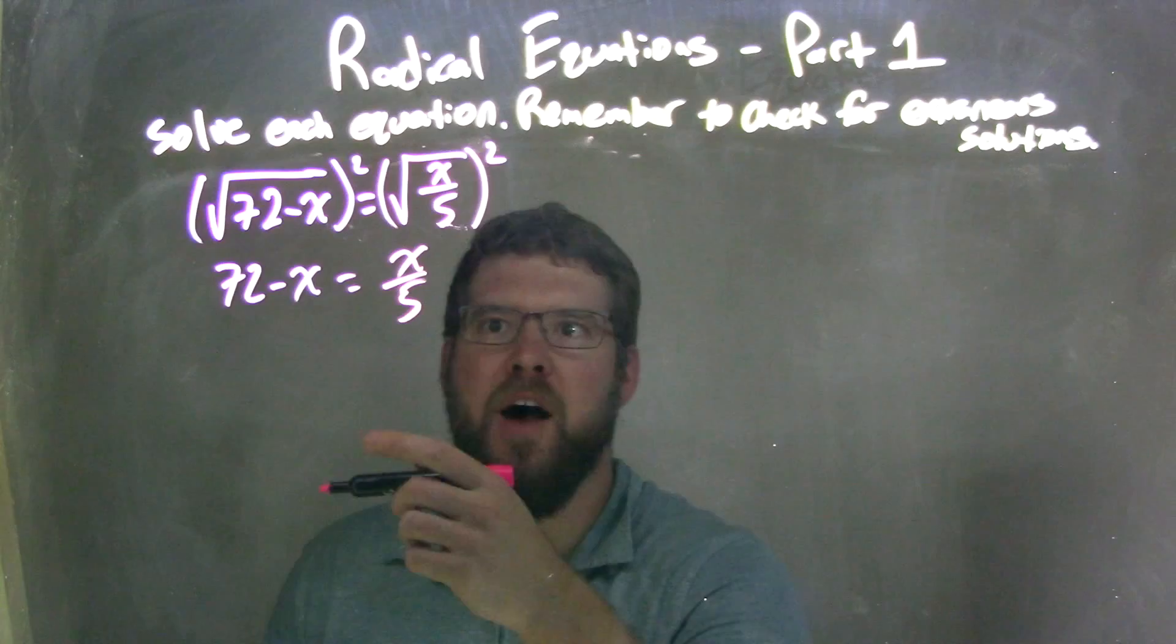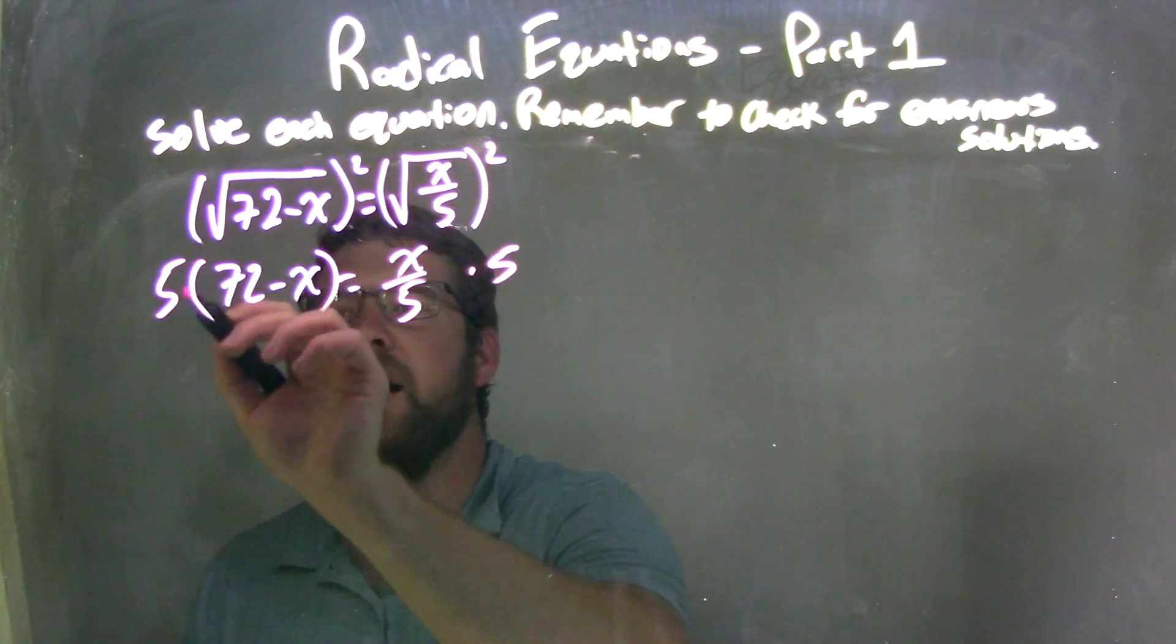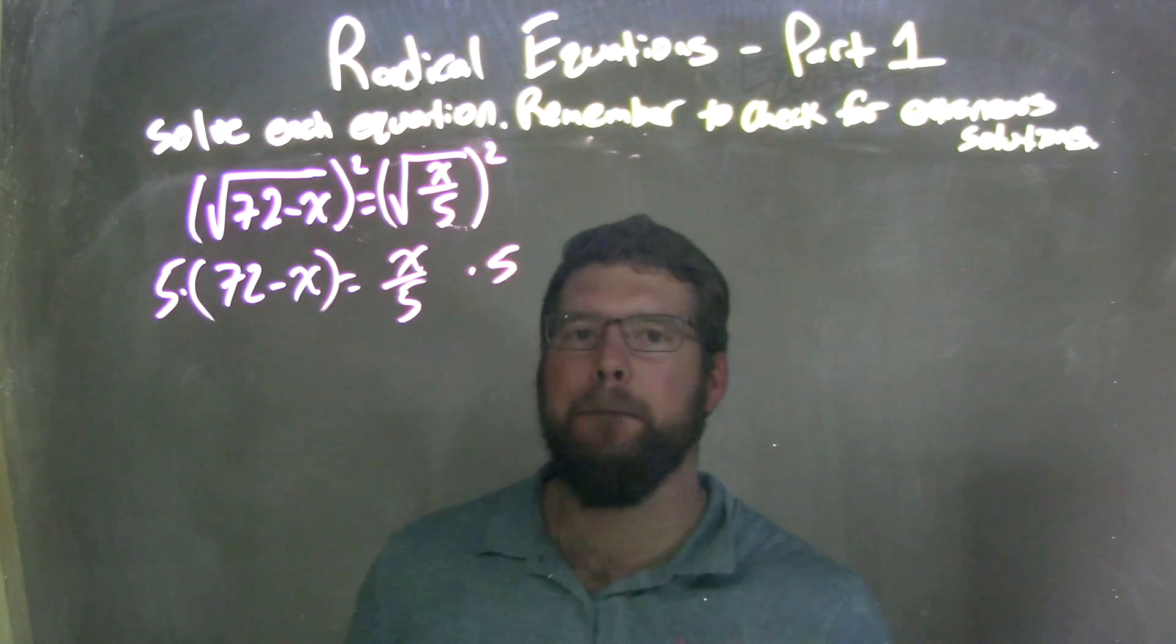But now that I put the 5, get rid of that 5, so I'm going to multiply both sides by 5. Be careful with the left-hand side, put your parentheses, because it has to go to both parts.